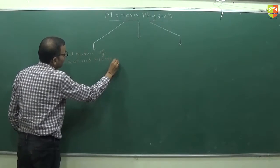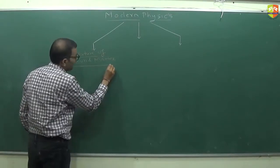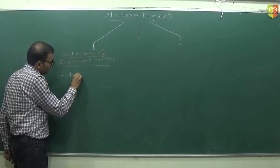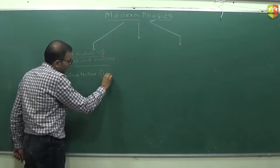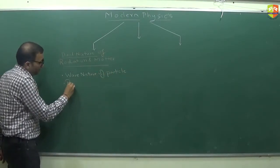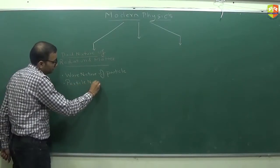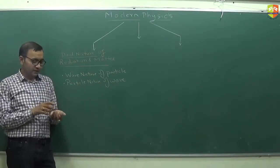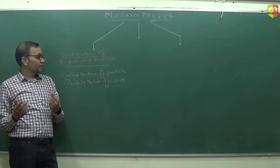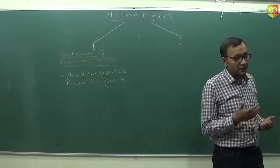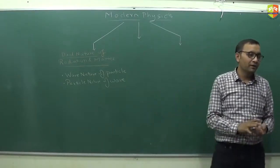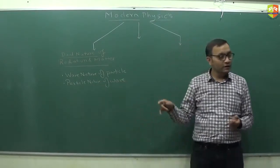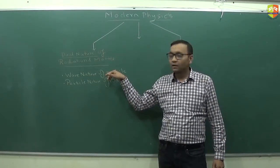The first chapter is dual nature of radiation and matter. In this chapter, you will learn wave nature of particle and particle nature of wave. See, for a wave, we have till now a basic understanding that wave is nothing but a disturbance, it's an energy. But first time, we'll be learning wave as if it is a particle. Particle and wave are two different kinds of concepts. But now we'll be studying wave as if it is a particle. And not only that, we'll be studying particle, the mass, as a wave in this chapter.